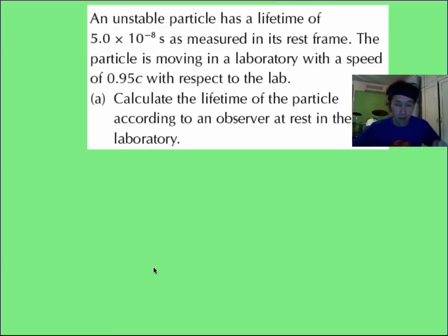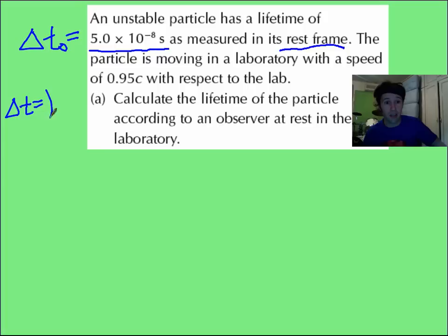IB problems involving time dilation and length contraction are actually not that difficult, as long as you know what is proper time and what is not proper time. Read this problem, and pause it, and then see if you can solve it. Now, hopefully, you saw that this time here, as measured in the rest frame of the particle, that's what we're going to call proper time, which usually gets the designation t sub 0.